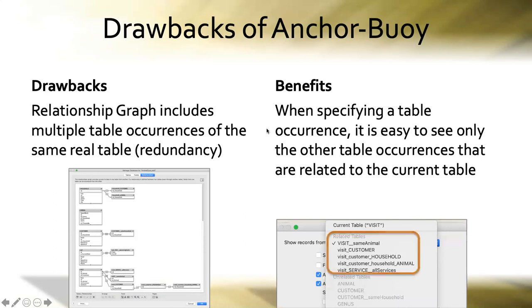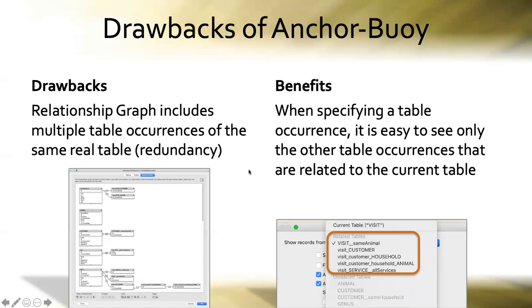However, the drawbacks are far outweighed by the benefits. When specifying a table occurrence — like when building a portal — it's easy to see only the table occurrences related to the current context. Starting from visit, only the connected table occurrences are available. All unrelated table occurrences sink down into a 'no man's land' — they're grayed out and not even selectable.